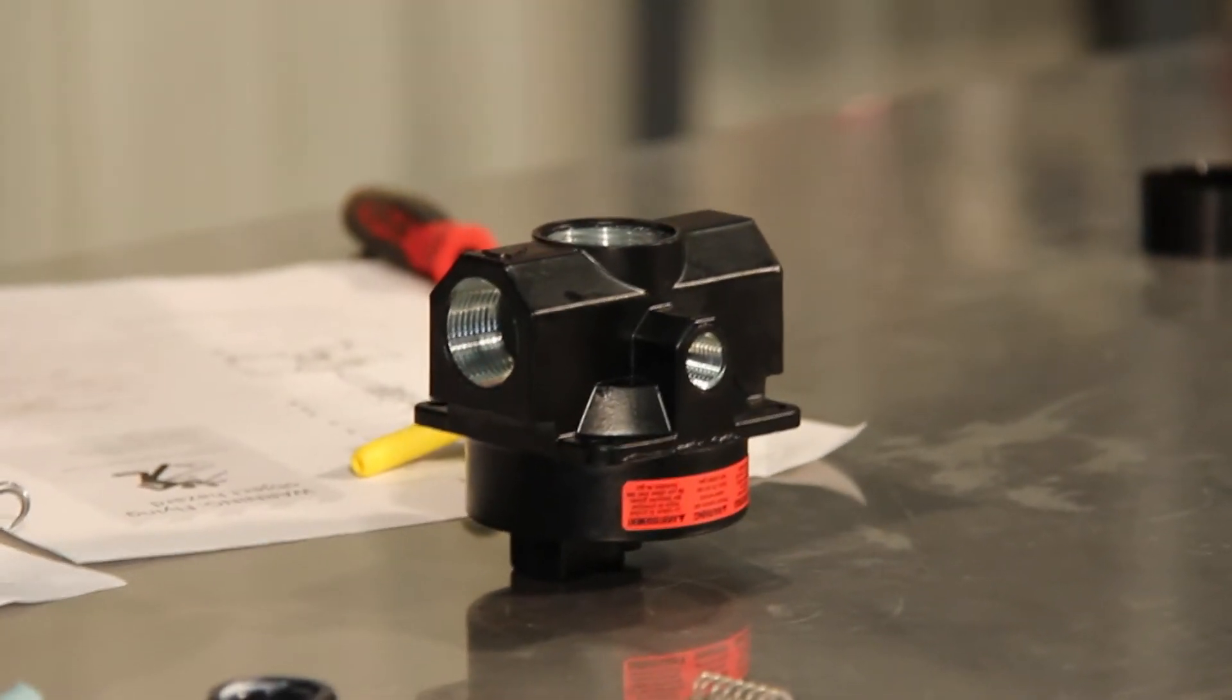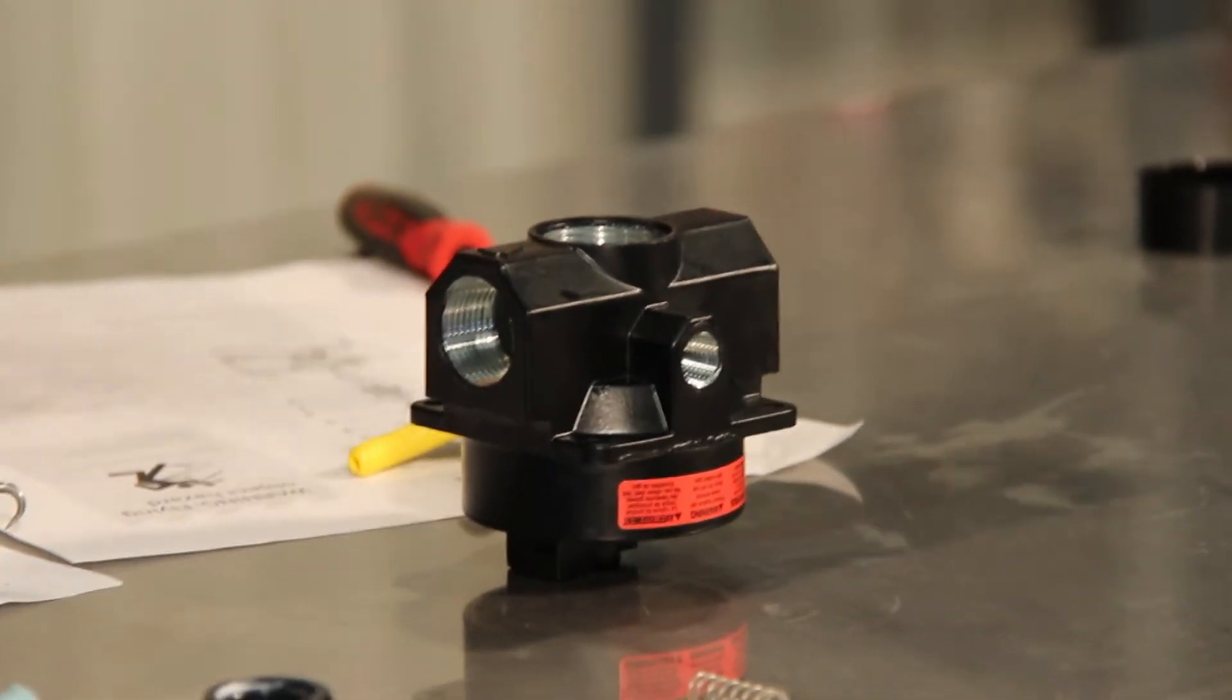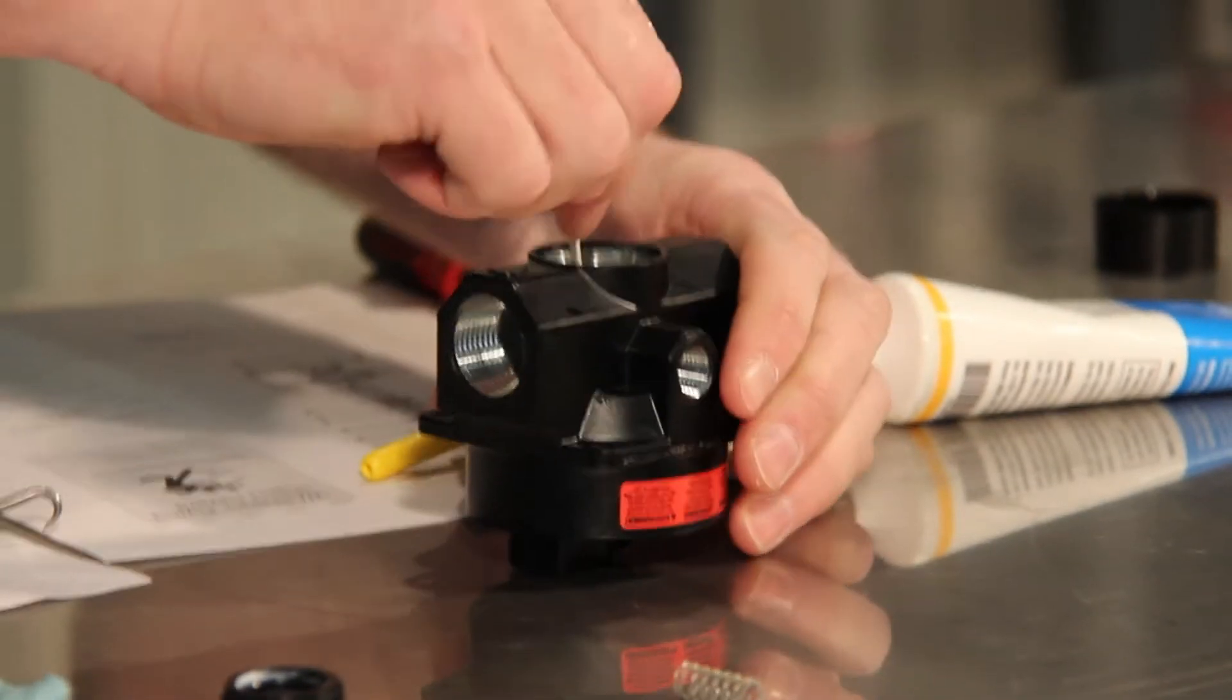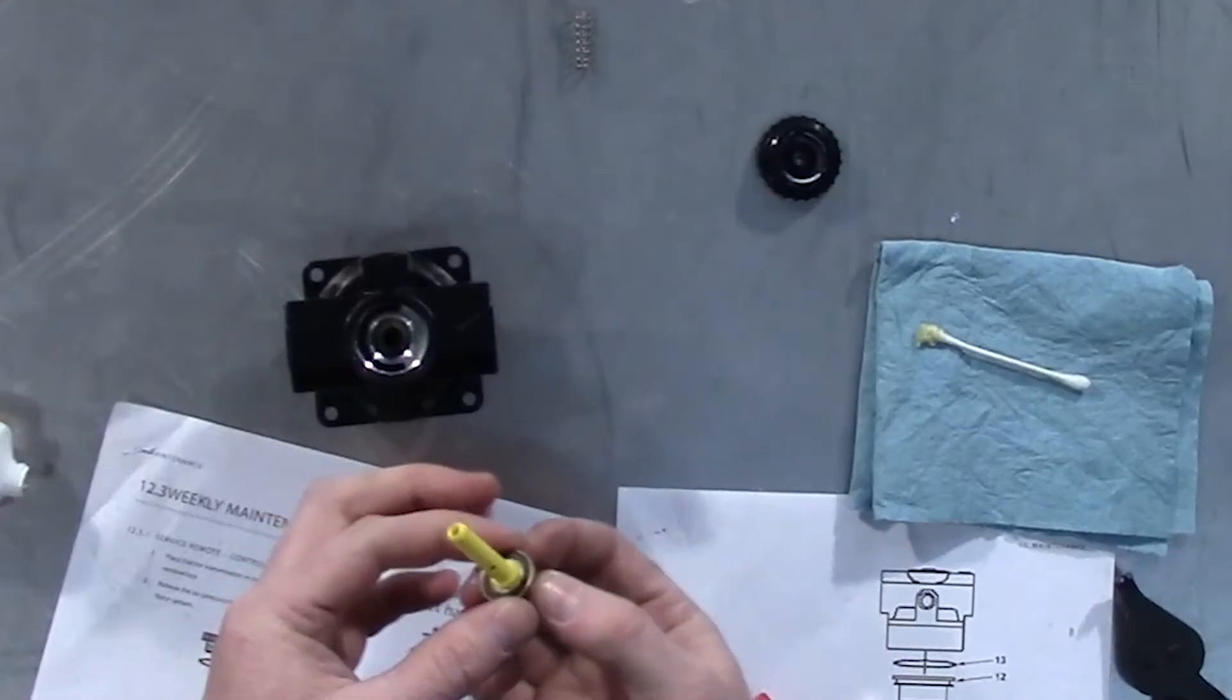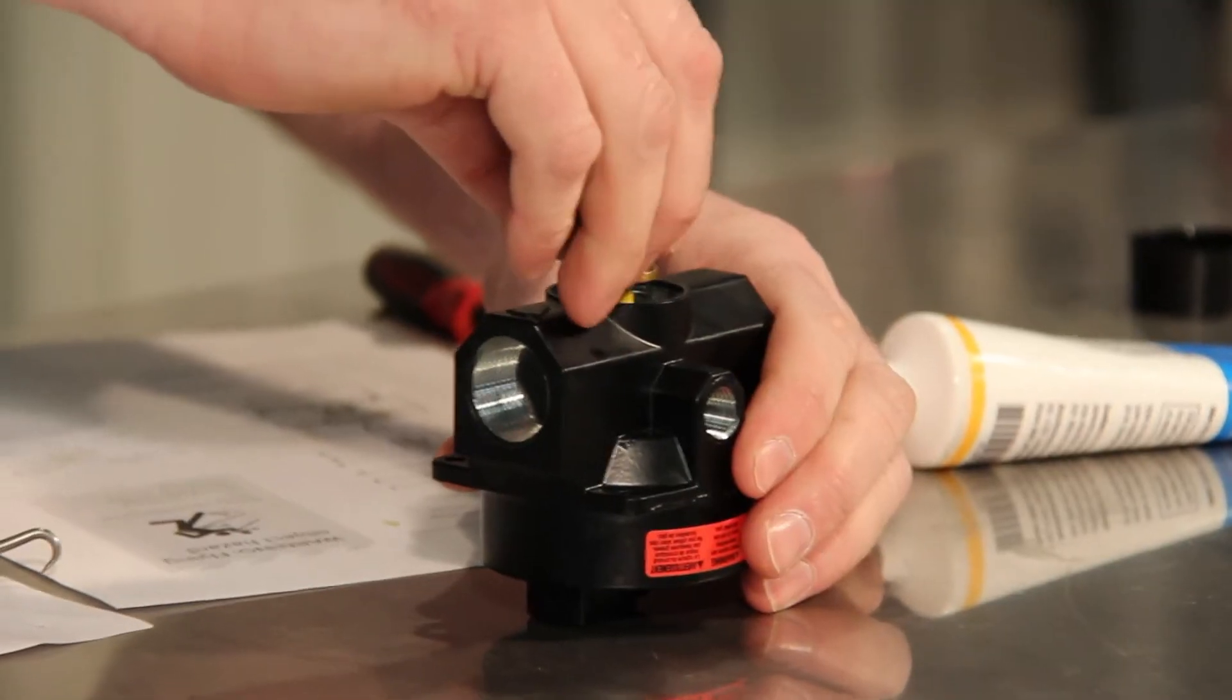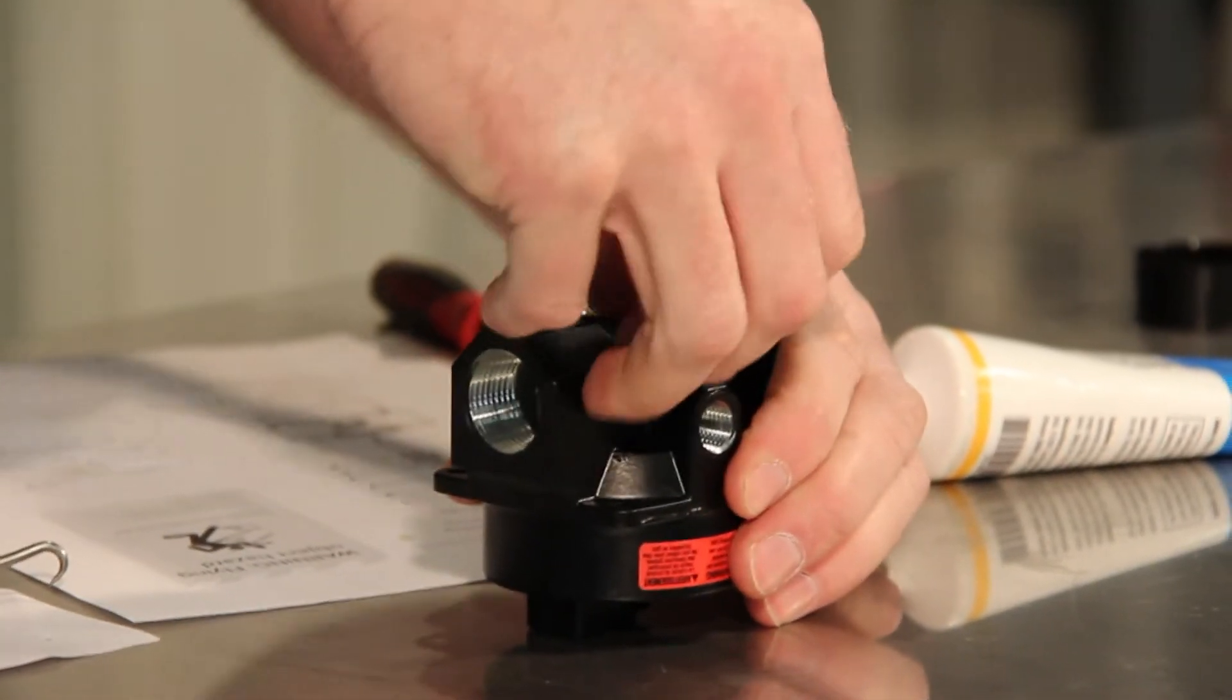We'll use our cotton swab to get lubricant down in the slide assembly, and we will replace the piston inside the regulator.